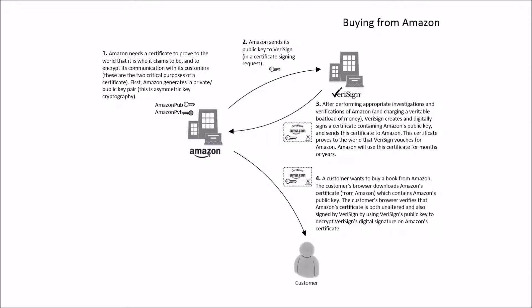Now a customer wants to buy a book from Amazon. The customer's browser downloads Amazon's certificate from Amazon, which contains Amazon's public key. The customer's browser verifies that Amazon's certificate is both unaltered and also signed by VeriSign, by using VeriSign's public key to decrypt VeriSign's digital signature on Amazon's certificate. Then the customer's browser generates a short-term, per-session symmetric key, encrypts it with Amazon's public key, and sends it to Amazon.